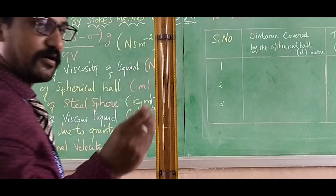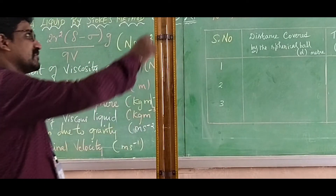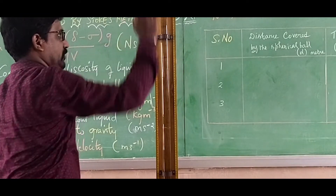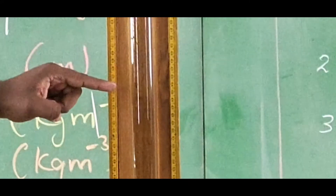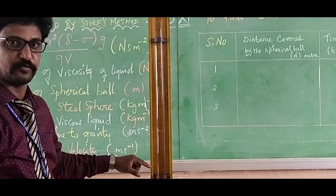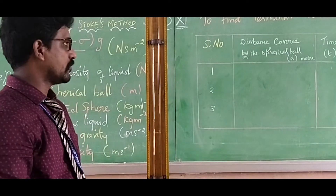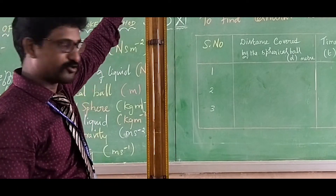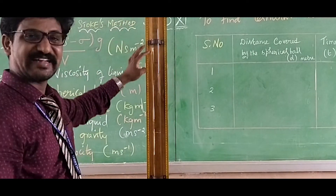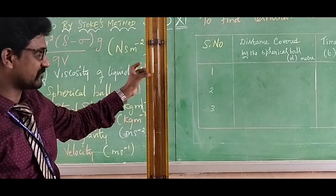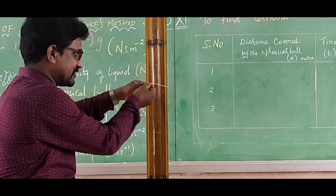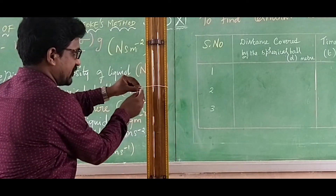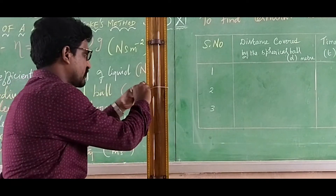Now let us take one metal sphere of 3 mm diameter. The metal sphere is dropped in the long jar. It travels with an accelerated velocity up to some length and then attains terminal velocity. That region is marked using a thread as a reference point, say 40 centimeters, where the sphere attains terminal velocity.